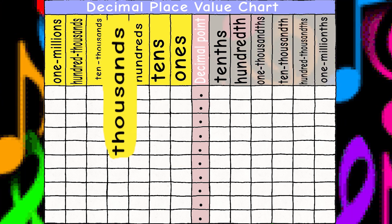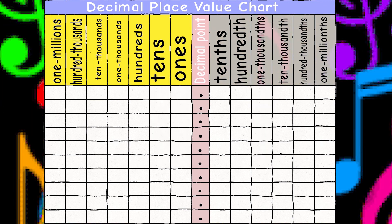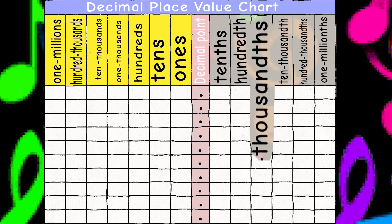Ones, tens, hundreds, thousands. Place thousands. Once, tens, hundreds, thousands. Place thousands. Hundreds, thousands. One, one, one, ones.